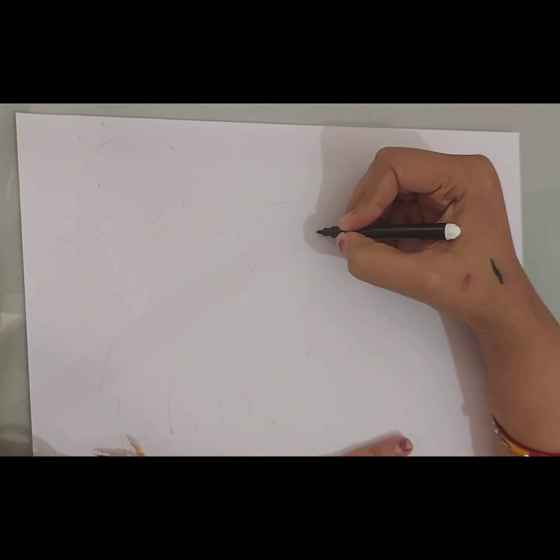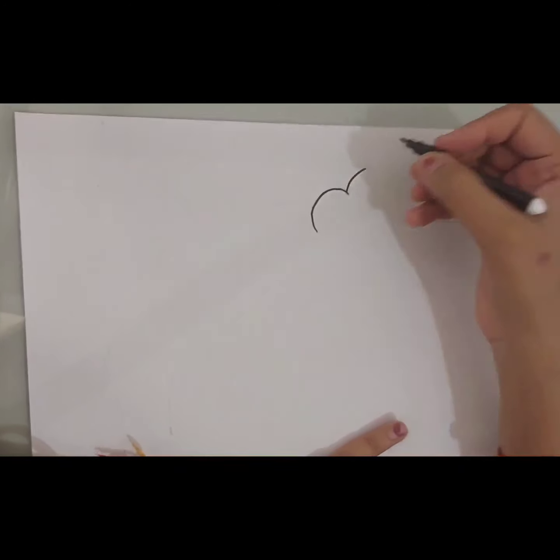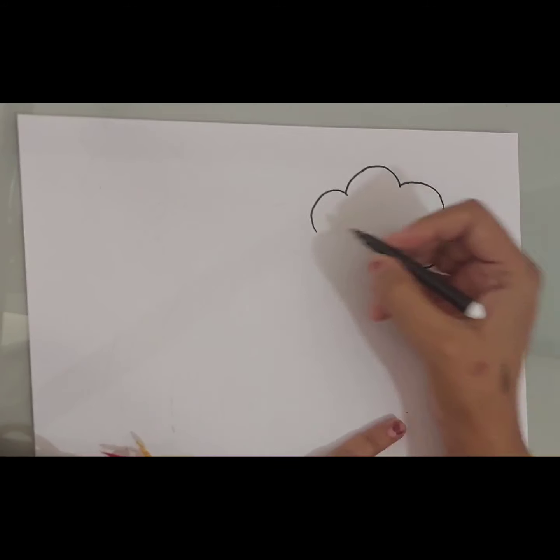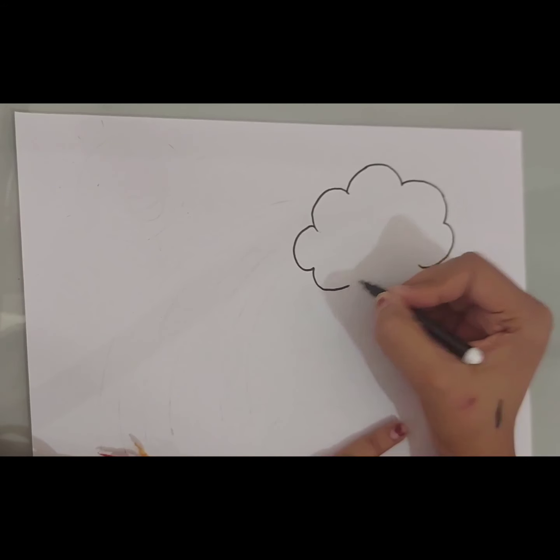First of all, we will draw a cloud because rainbows generally show up in the rainy season. When rain is going on and the sun comes up, by the reflection of sun in the water, we can see a rainbow in the sky. So I am drawing a rainy cloud.